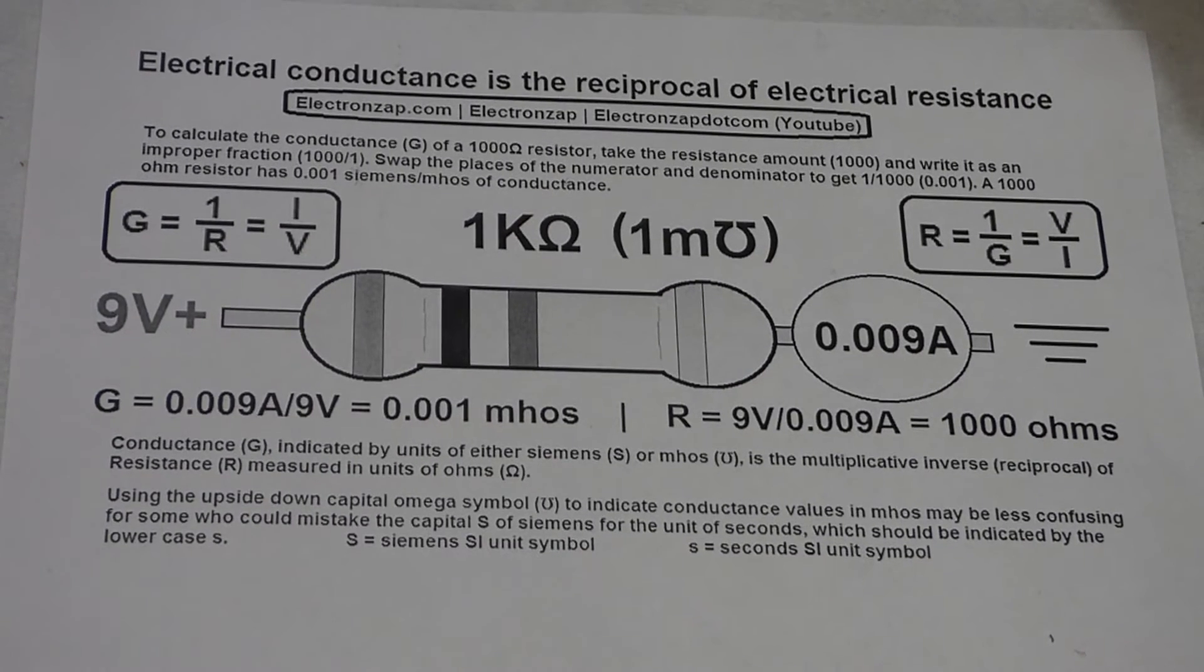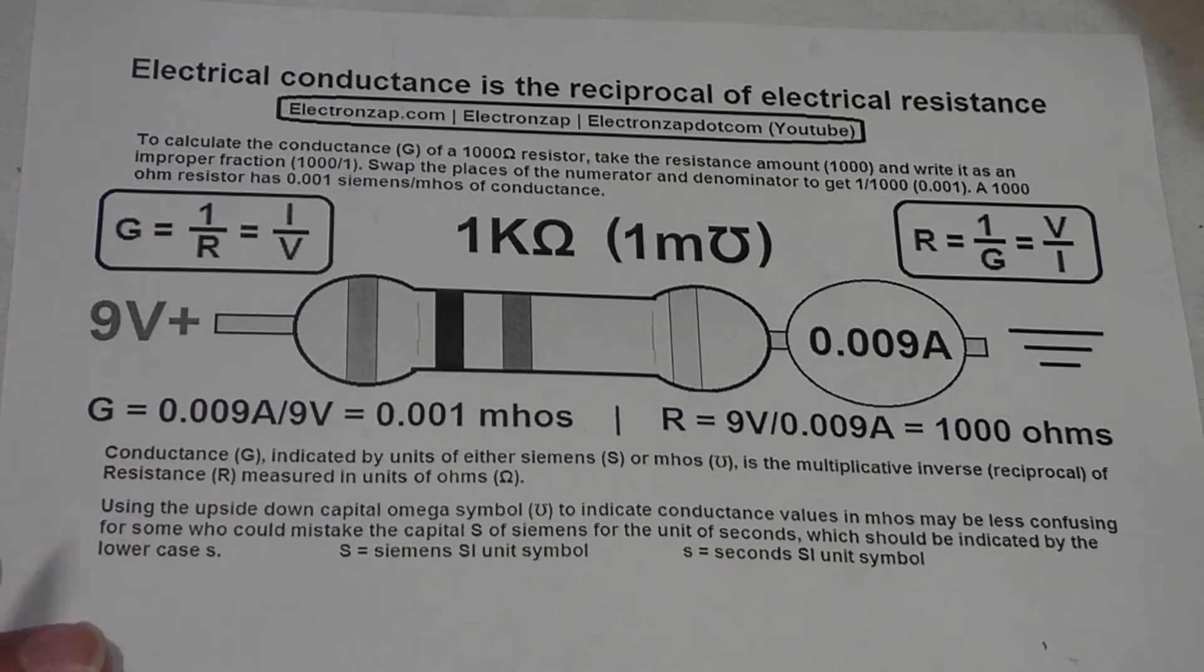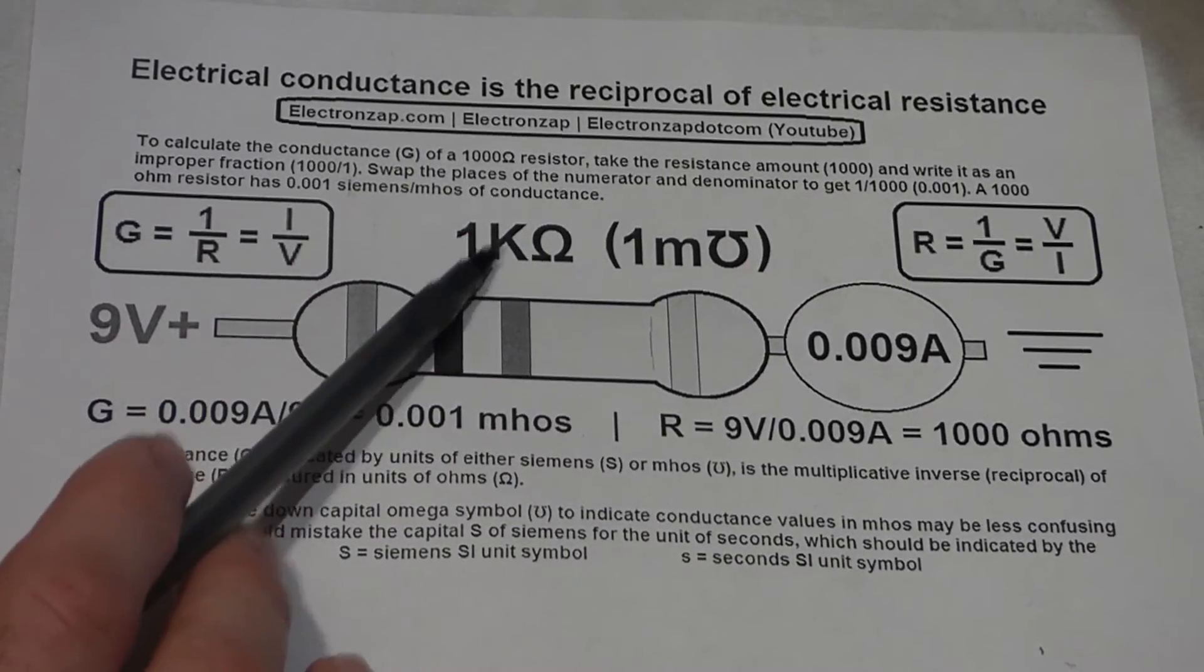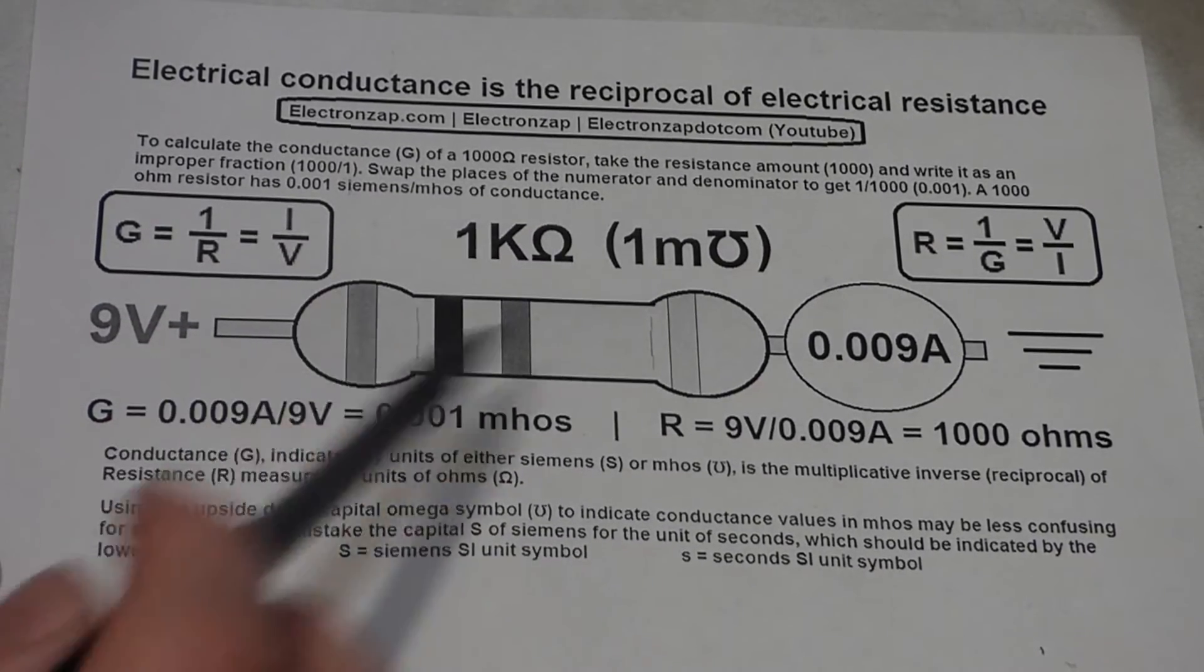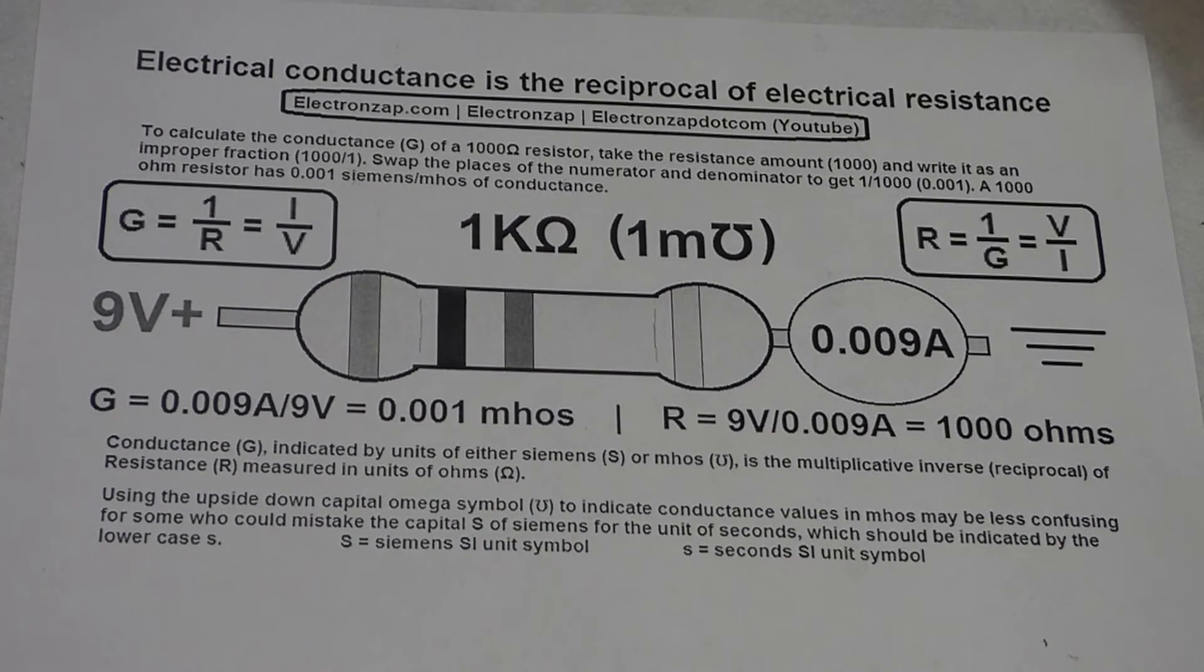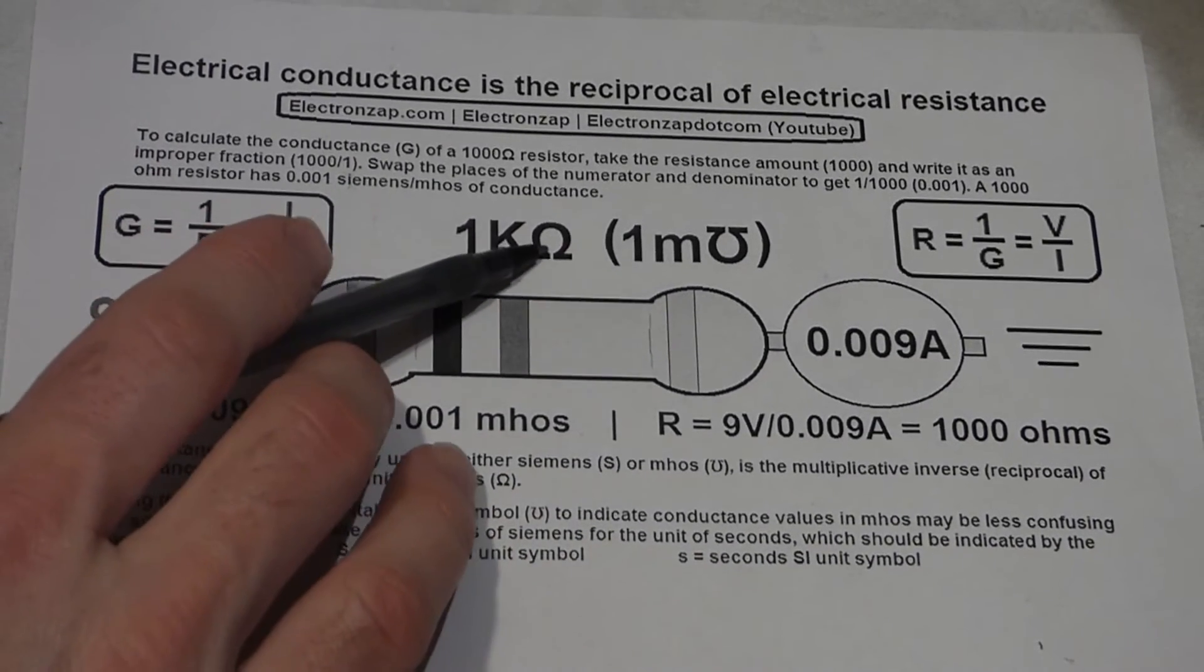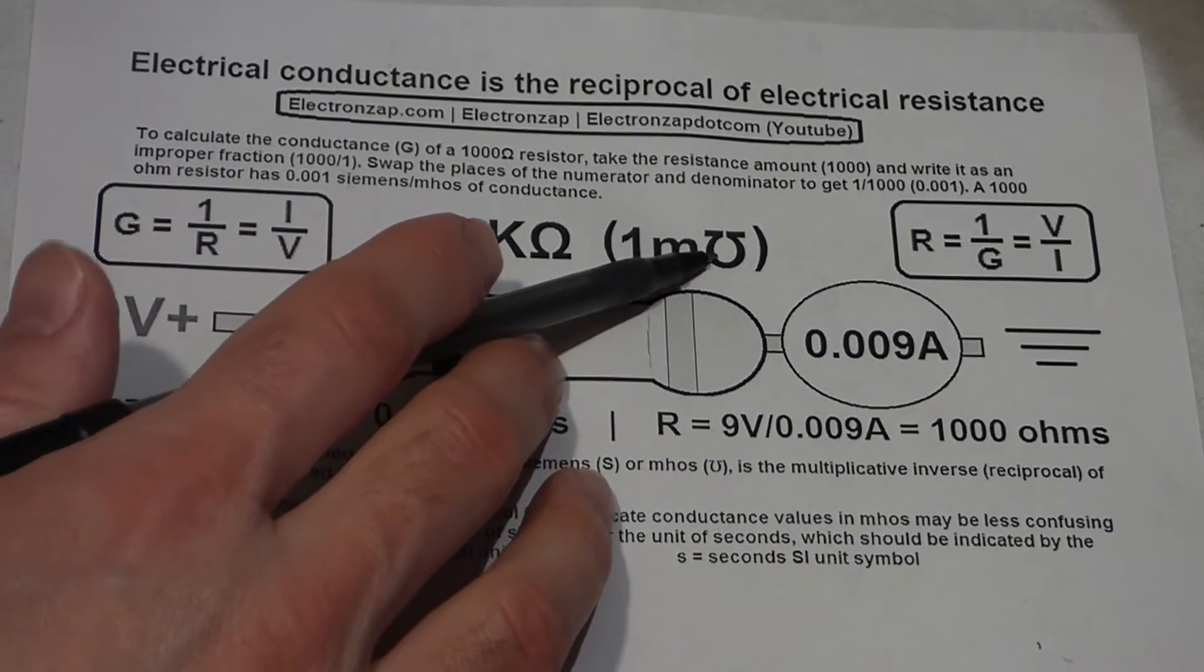Here we can put some numbers to that. I explained how you calculate the conductance based on the resistance. This symbol here, it's an upside down omega symbol. The omega symbol is used for resistance in ohms. So this symbol is called Mhos.